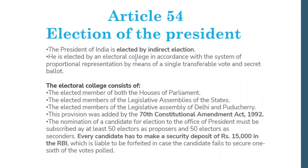Article 54 talks about the election of the President. How does the President's election happen? It has been asked many times. The President of India is elected by indirect election. He is elected by an Electoral College, in accordance with the system of proportional representation by means of single transferable vote and secret ballot.